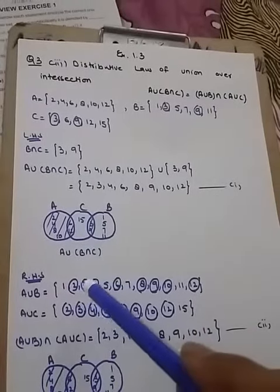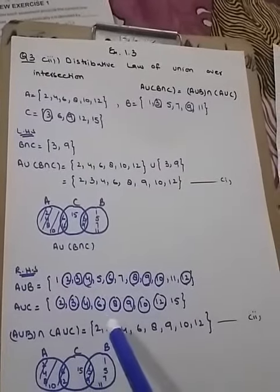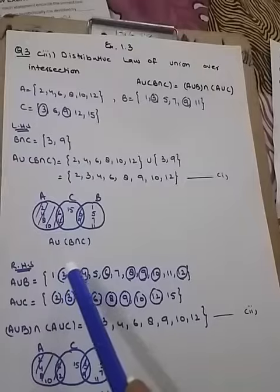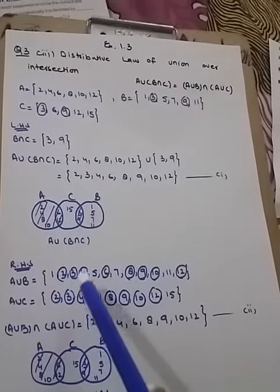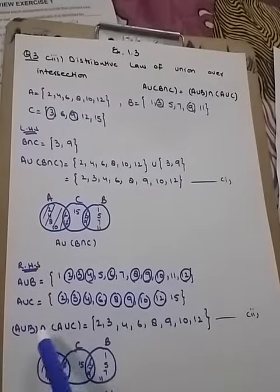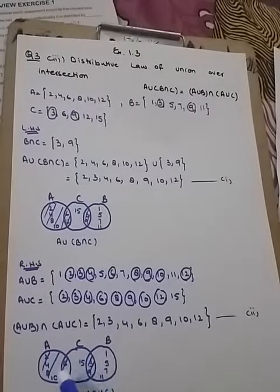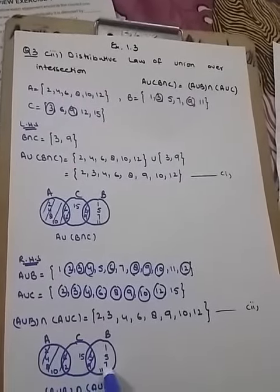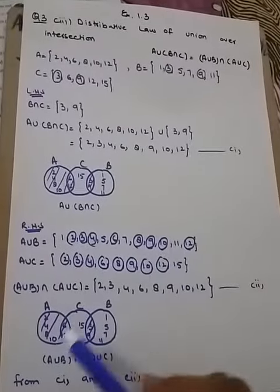Intersection of these two, I have already encircled the common elements and these are the common elements between A union B and A union C. Again the Venn diagram is same, you just have to see shading part.